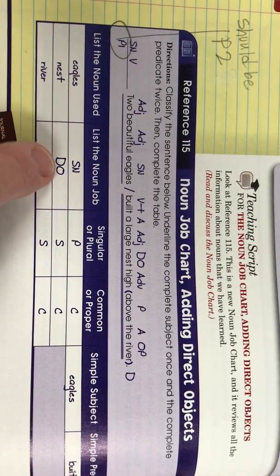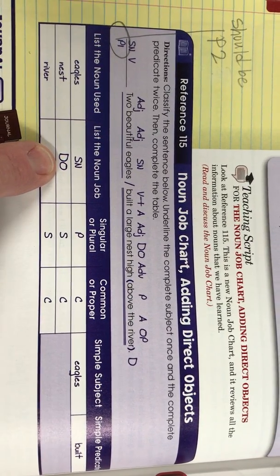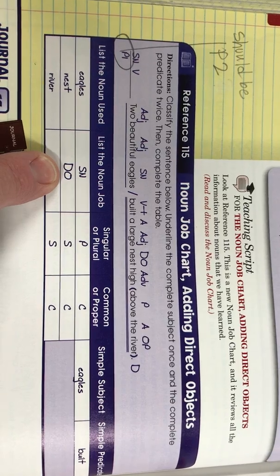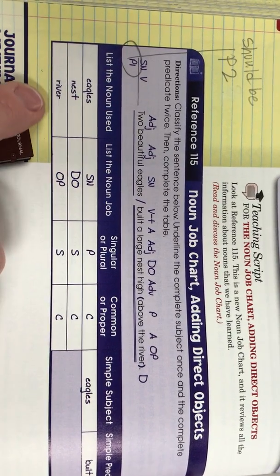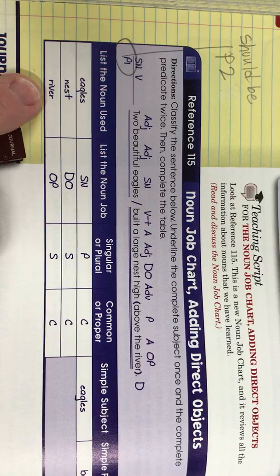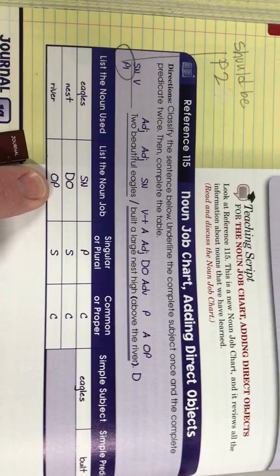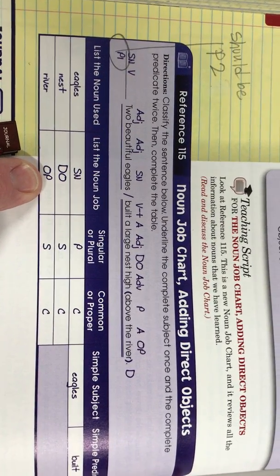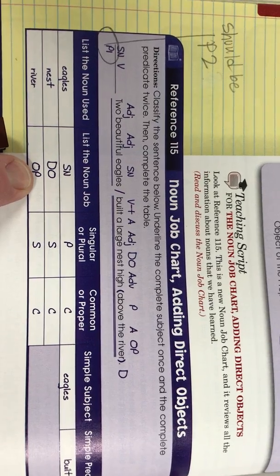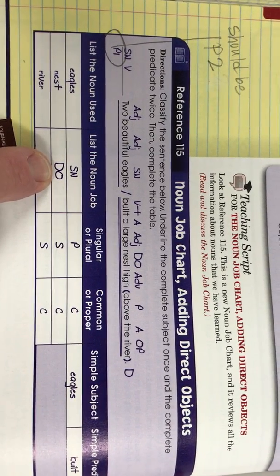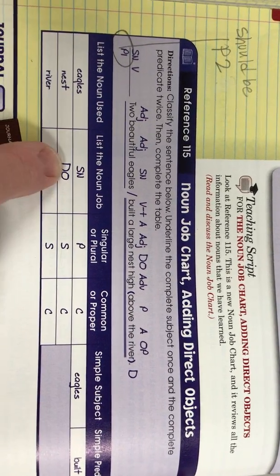So you can have direct object now in your column where it says list the noun job. Then the other noun in this sentence is river, which is the object of the preposition. So you're learning a lot already, and we've added the direct object to the noun job. We've got three noun jobs, boys and girls.